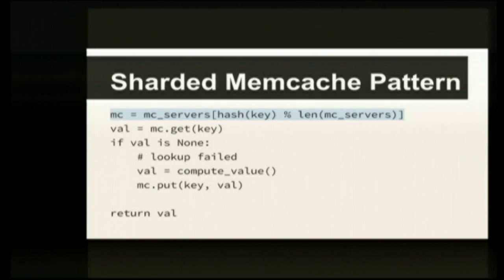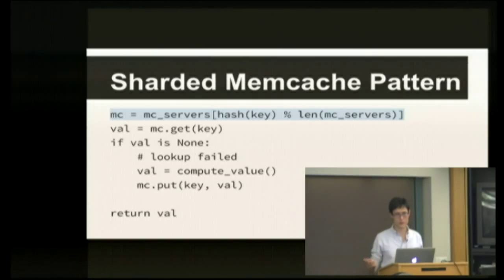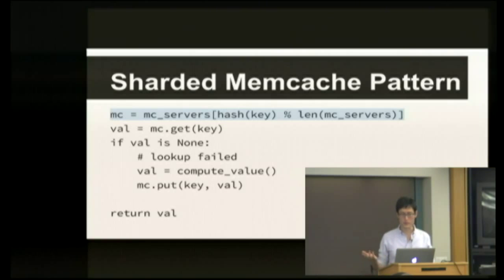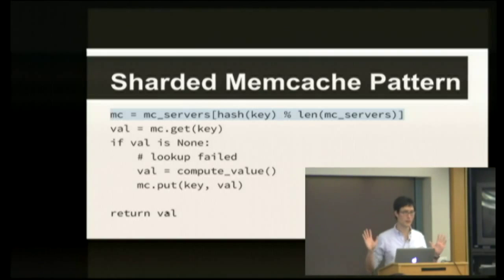The standard way of going about this is to take the key, hash it, and then map that to one of your shards. Let's say we've got three memcache servers. We convert the key into a number — the hashing function should produce a fairly random-looking number — then mod that by three, which gives us a value of zero, one, or two, mapping to which shard we're going to. The pattern changes very slightly: we look up a different shard to go to, but the last few lines of code are all the same.